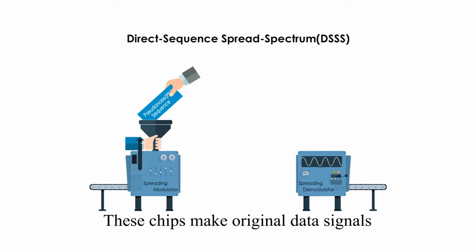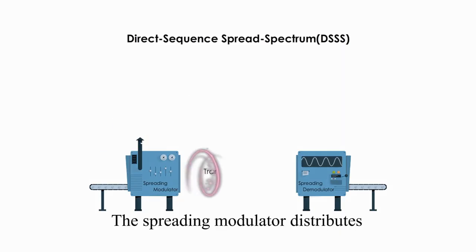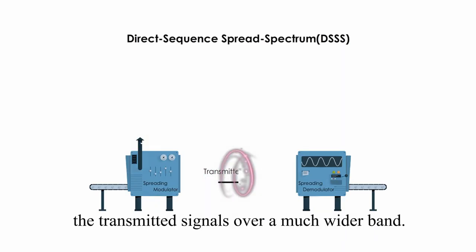These chips make original data signals identical to PN code, close to noise level signals. The spreading modulator distributes the transmitted signals over a much wider band.